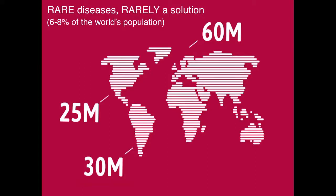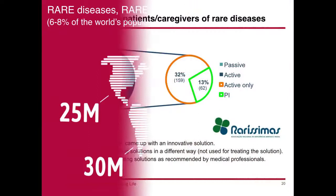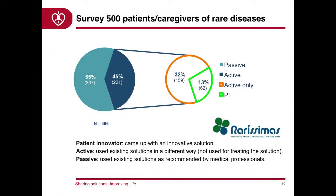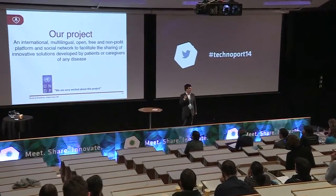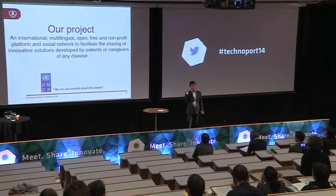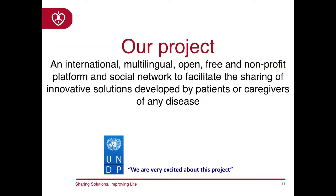That's when people started believing us — until then, people said those were just random examples. We then focused on rare diseases. Rare diseases are individually rare, but almost 10% of the population suffers from one, which is a lot of people. There is a strong incentive for people with rare diseases to do something about it, because pharmaceuticals and science don't have the incentive — there may be only 20 people with a given disease in Portugal, so there's no market incentive to develop drugs for it.